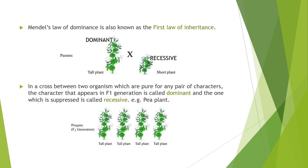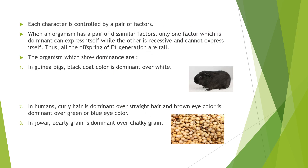Mendel's Law of Dominance is also known as the First Law of Inheritance. In a cross between two organisms which are pure for any pair of characters, the character that appears in F1 generation is called dominant — in this case tallness is dominant — and the one which is suppressed is called recessive. Each character is controlled by a pair of factors. When an organism has a pair of dissimilar factors, only one factor which is dominant can express itself, while the other is recessive and cannot express itself. Thus, all the offspring of F1 generation are tall.